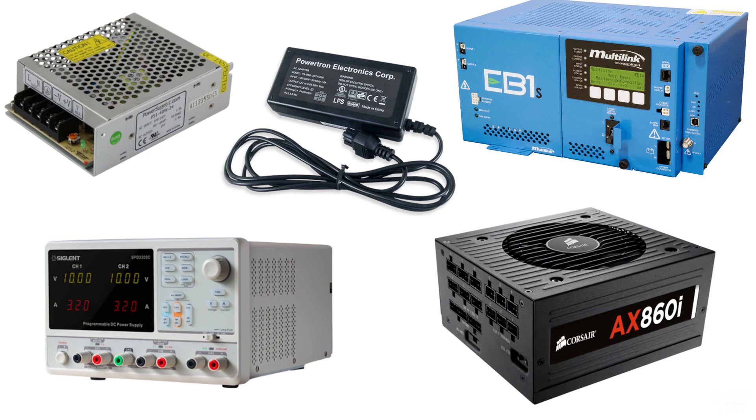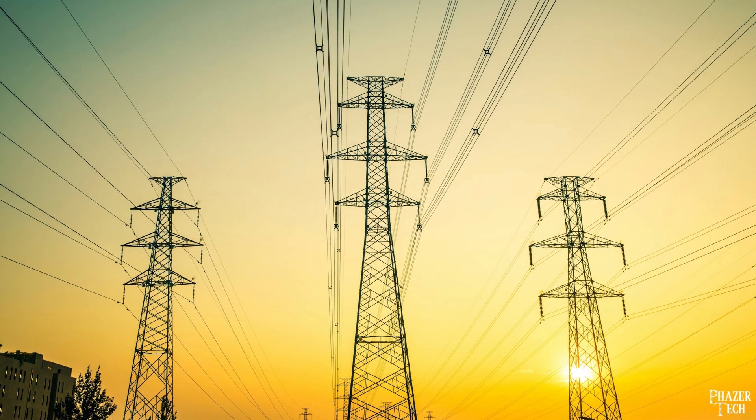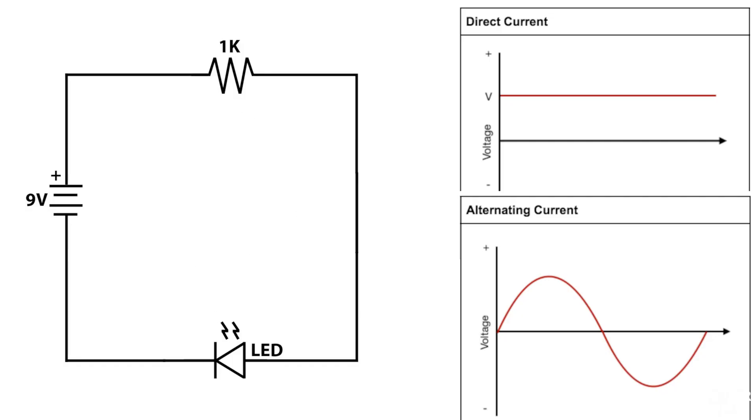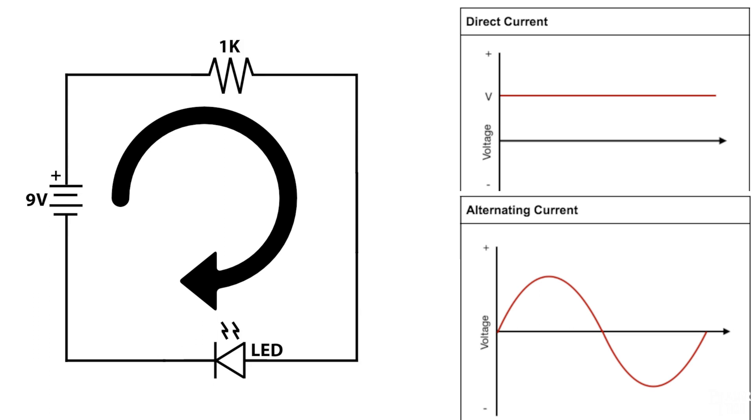Now everything I've been talking about with the water analogy up until now has assumed we were using direct current. AC stands for alternating current, and it's what runs through the power lines over long distances, and enter our homes through the power outlets. And this is where the water analogy starts to fall apart and doesn't really apply anymore. Instead of direct current where the current continuously flows in the same direction, alternating current will actually change direction each time it reaches the power source, and will continue to bounce back and forth at a specific frequency.